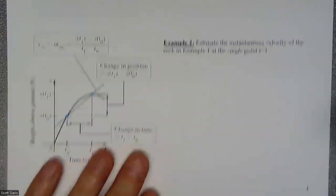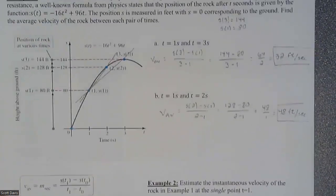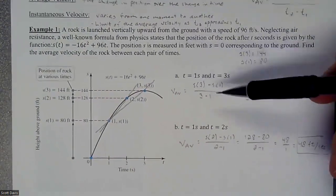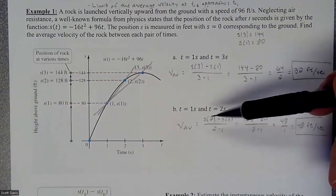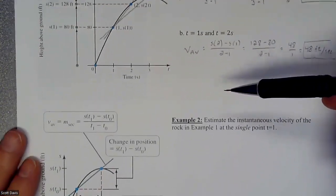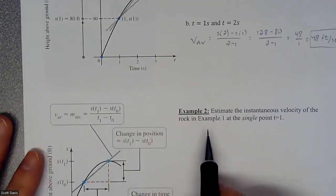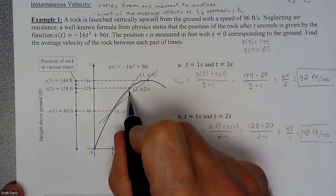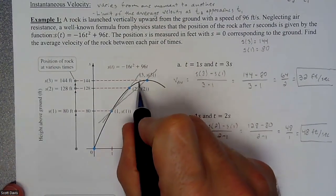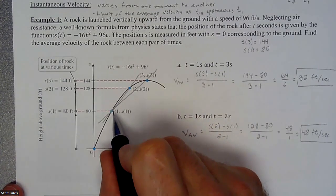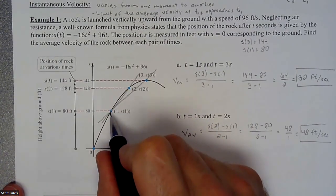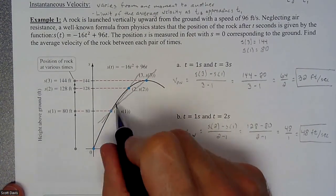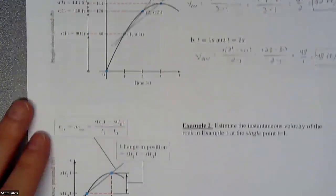In this lesson we're going to do the second example. The first one was about average velocity and how we found that, which really just ended up being slope. But this time we're going to take this idea and find an instantaneous velocity, which means we start to pull the second point closer and closer to the original point to get a more accurate slope.